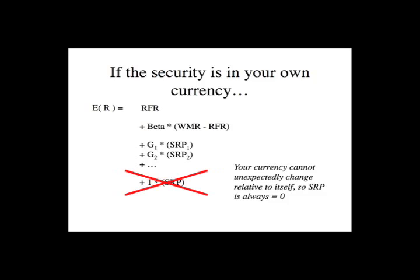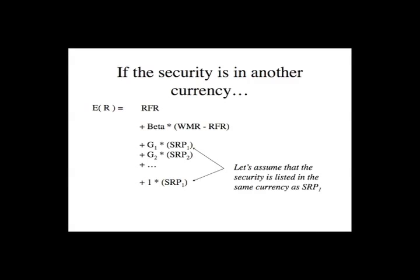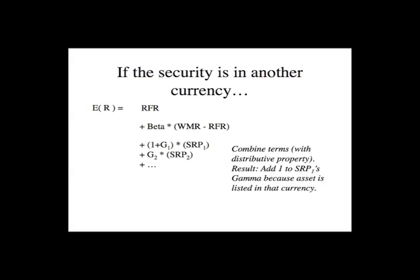But if you are invested in the same country, you do not have the security risk premium. Now let's talk about the part where they say if you're invested in a foreign asset, you have to add one to gamma. Suppose we're investing in Petrobras and spot risk premium number one is the strength of the real versus the dollar. Because we're invested in something listed in reais, we have direct exposure — that's the one times the SRP. The company is also affected by the strength of its own currency, so there's a gamma to that currency. Using the distributive property to combine those terms is where the one plus gamma comes from.